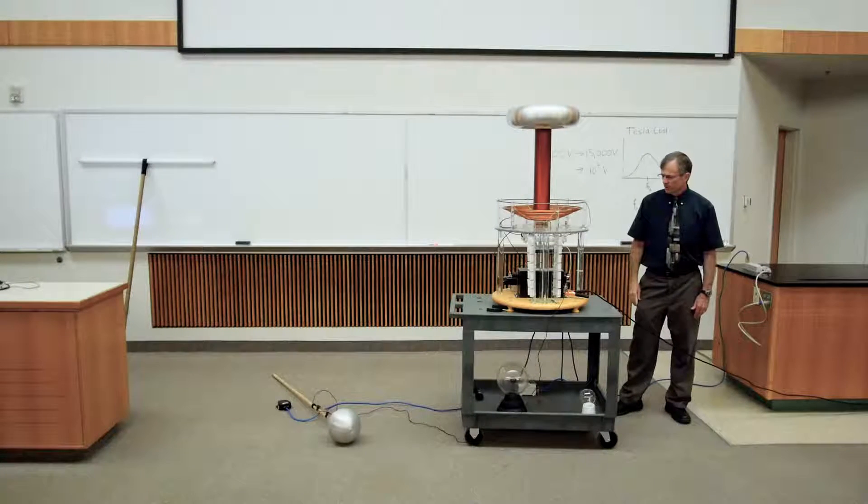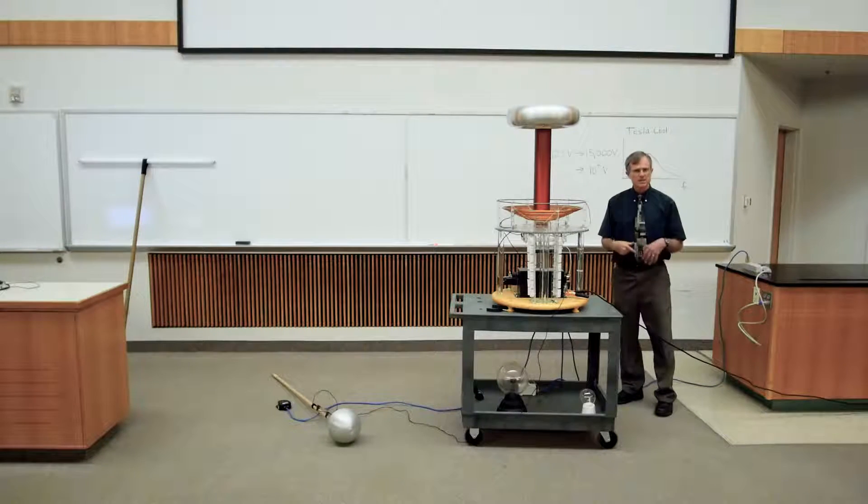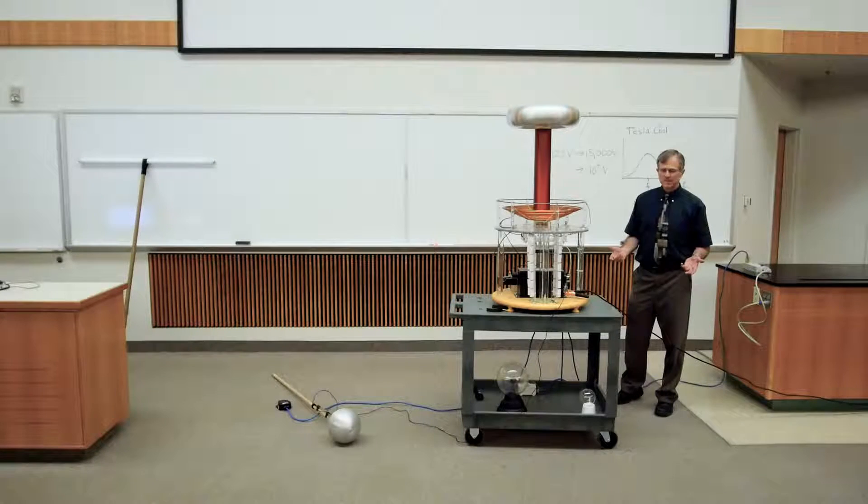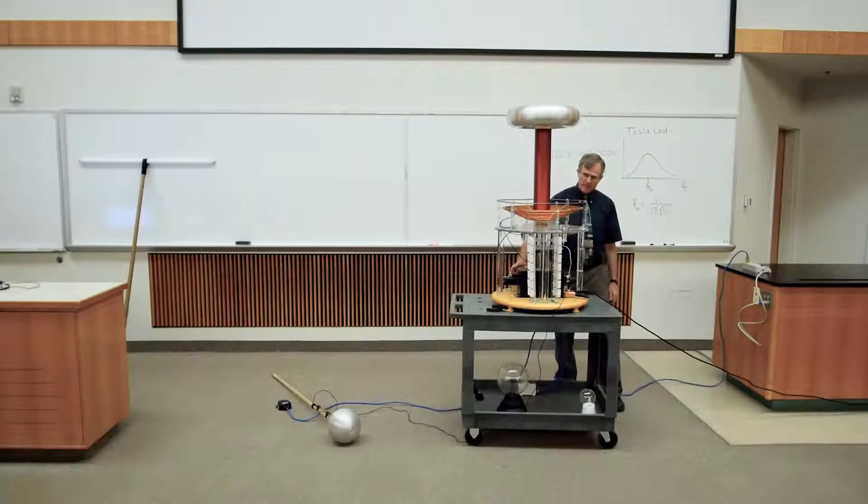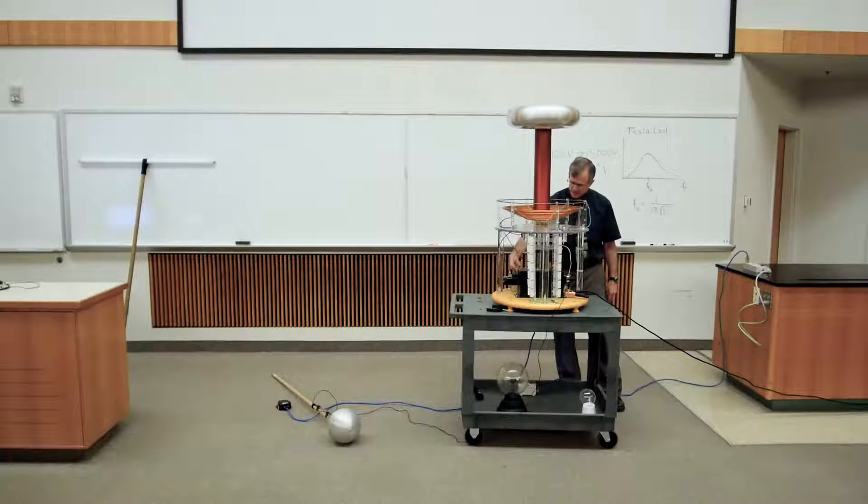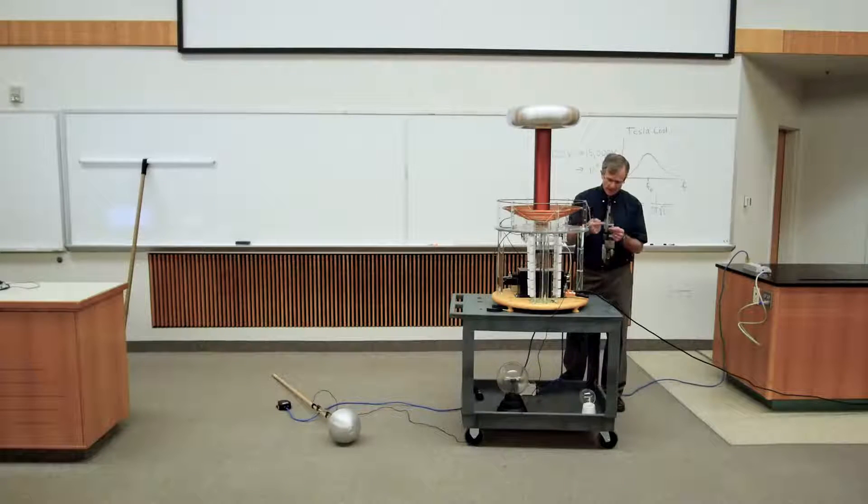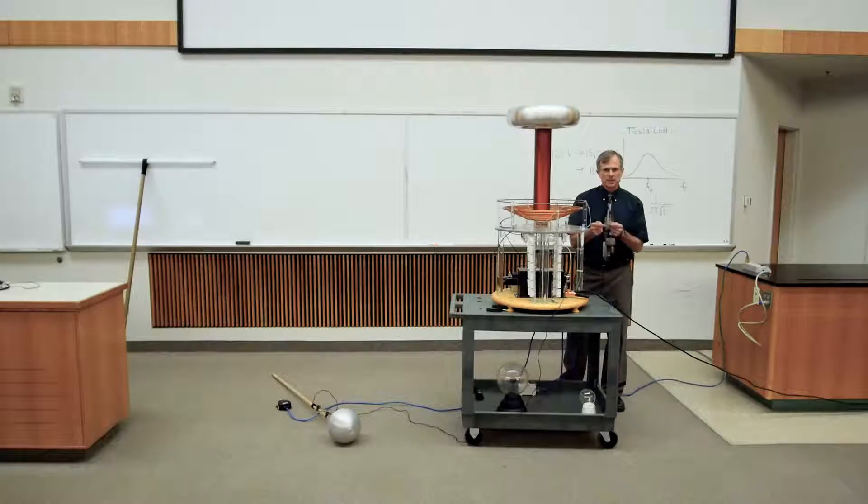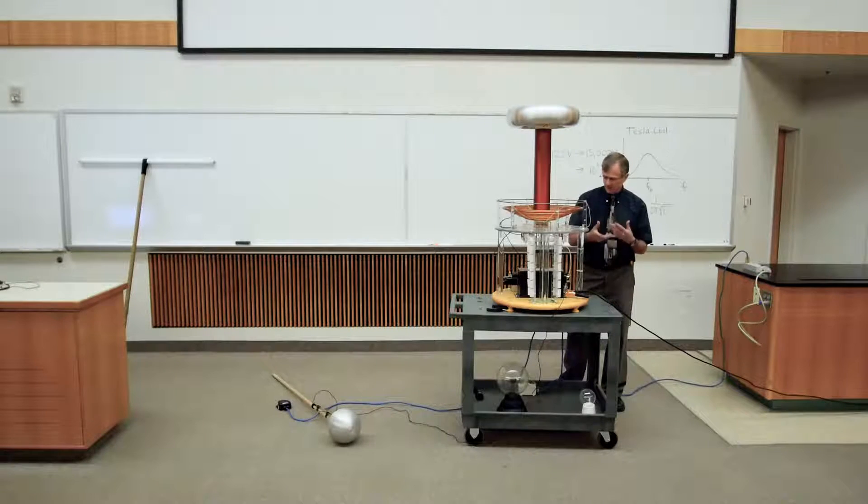The other element of this is the so-called spark gap, which sets the frequency of the Tesla coil. And the spark gap is set by a spinning disk, and there are contacts that, as the disk spins, these contacts come close to each other. They don't contact each other, but through a small gap, there's a spark that comes across.